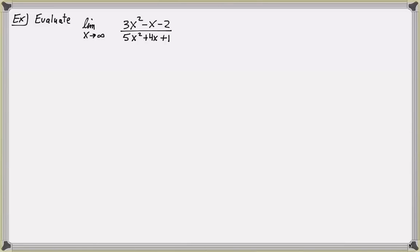Note that dividing by x will never give us division by 0, because we're only considering values of x that are very, very large. So in this example, the highest power of x in the denominator is x squared. So I'm going to divide both the numerator and denominator by x squared.